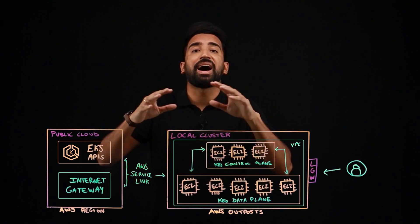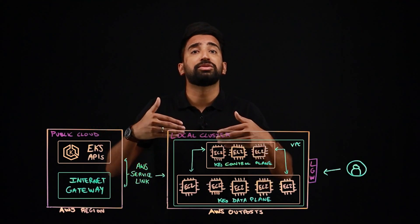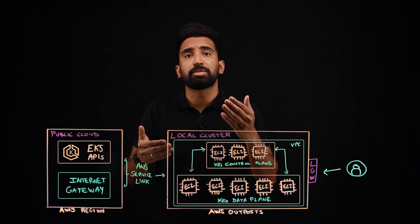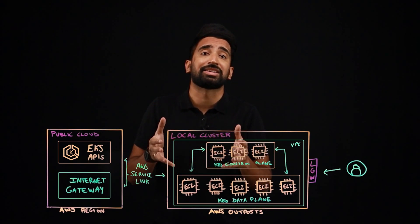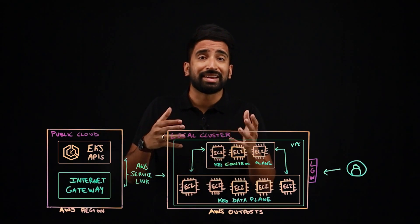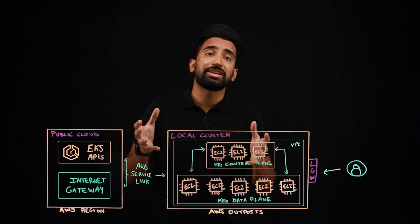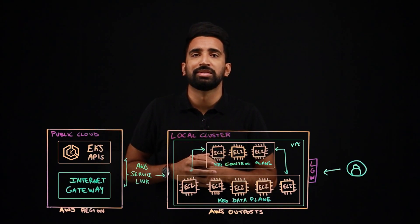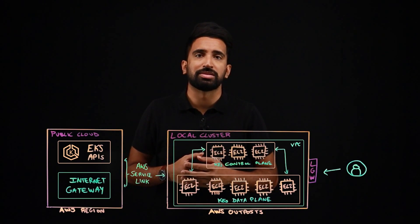Because the entire cluster runs locally on Outposts, apps remain available and you can perform cluster operations during those network disconnects to the cloud. When connected to the cloud, EKS manages the availability of the control plane on Outposts, simplifying Kubernetes operations.